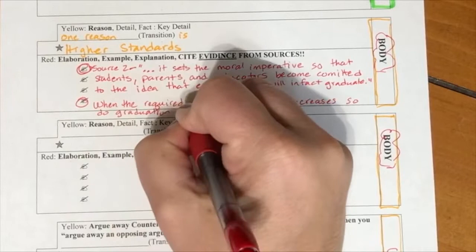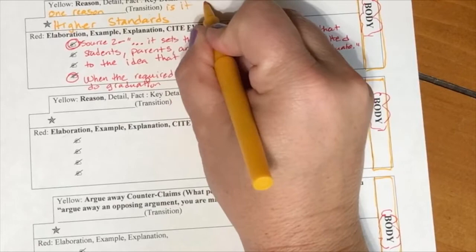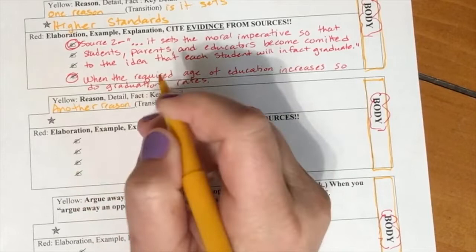Then we're going to think about another reason. We want to think about a way that we can transition to a new paragraph. Some simple transitions are like another reason, a second reason, or secondly, or in addition to higher standards, a higher age of required education leads to better opportunities.